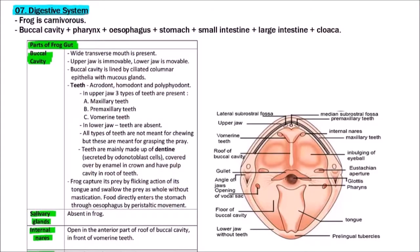Welcome to Studio Biology. In this video we are going to discuss the digestive system of frog. Frog is carnivorous by habit. The digestive system is divisible into buccal cavity, pharynx, esophagus, stomach, small intestine, large intestine, and cloaca.